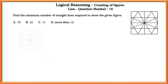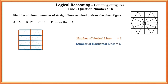Question number sixteen: find the minimum number of straight lines required to draw the given figure. The number of vertical lines equals 3, horizontal lines equals 5, and slanting lines equals 8. Total lines equals 16, which is more than 12, so the answer is D.